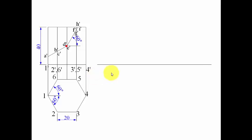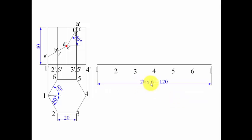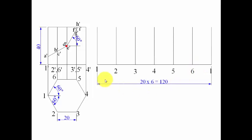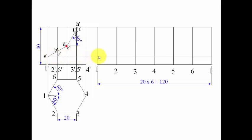Now let's start with the development. Draw a straight line: point 1 to 2 is 20mm, 2 to 3 is 20mm, and so on for all 6 faces — 1, 2, 3, 4, 5, 6, and back to 1. So 20 × 6 equals 120mm — the total length of this base line is 120mm. Then go upward by 40mm. Now we begin placing the cut points: A dash is at a certain height, drawing a horizontal line from it, it intersects above point 1 on both ends — so those become point A on both sides.